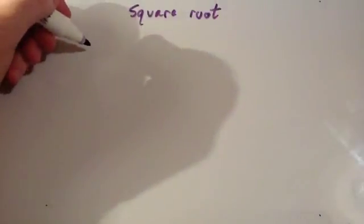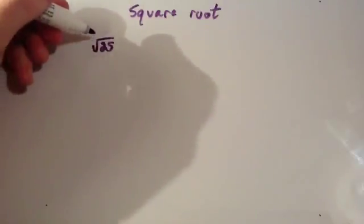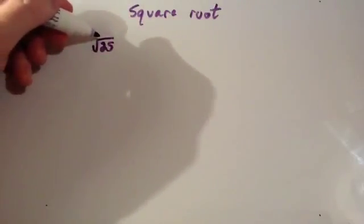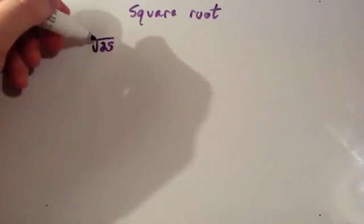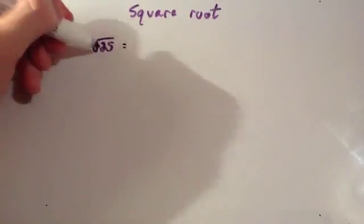If I was to take the square root of 25, now this is the square root symbol, it looks a bit like a tick which is extended, but it's a square root symbol. You sort of go down, around, up and across. If you wanted to take the square root of 25...